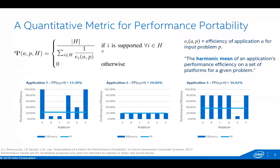The performance portability metric was proposed a couple of years ago in a journal paper by John Pennycook, Jason Sewell, and Victor Lee. Mathematically, the performance portability metric is the harmonic mean of an application's performance efficiency across a set of platforms H for a particular input problem. There is a special case where performance portability is forced to zero if the application doesn't run correctly on any platform in the set — because you shouldn't claim performance portability if you can't even claim basic portability.